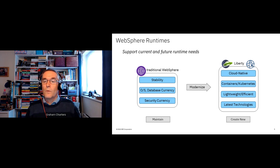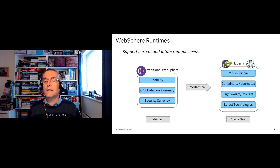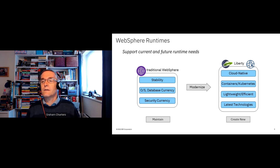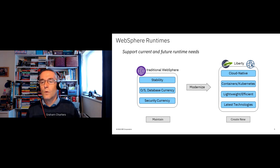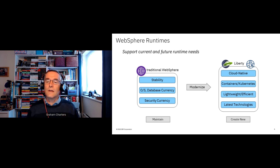For Liberty, there are two main roles. First, for creating new cloud-native applications — supporting containers and Kubernetes as first-class capabilities, ensuring the runtime is lightweight and efficient, and supporting the latest technologies and APIs. If you're going down a microservices route, you potentially have tens or hundreds more instances, so you don't want a full enterprise Java application server runtime with capabilities you don't need.